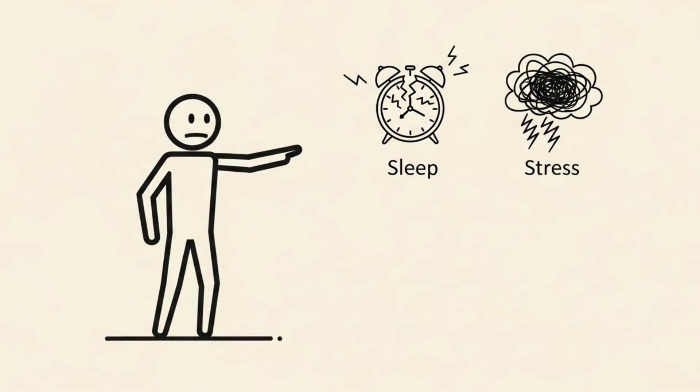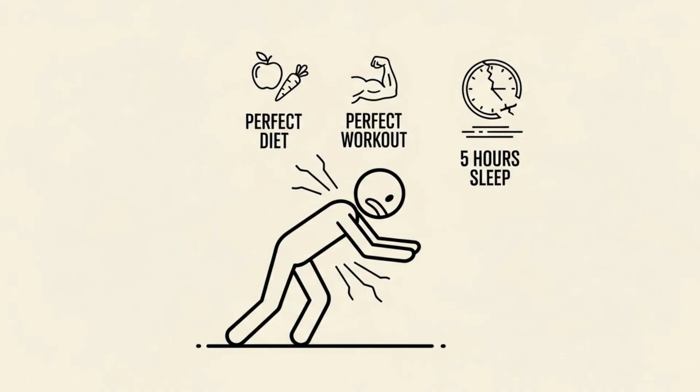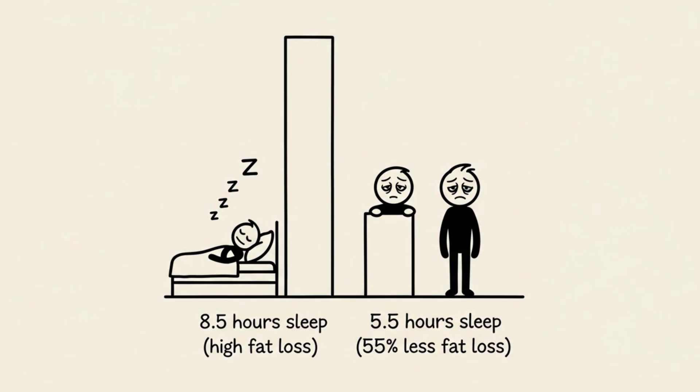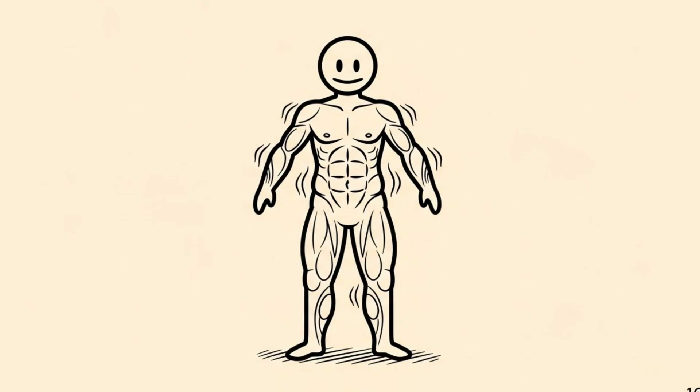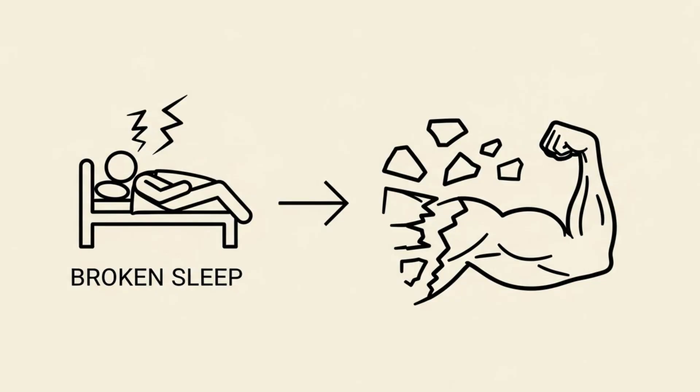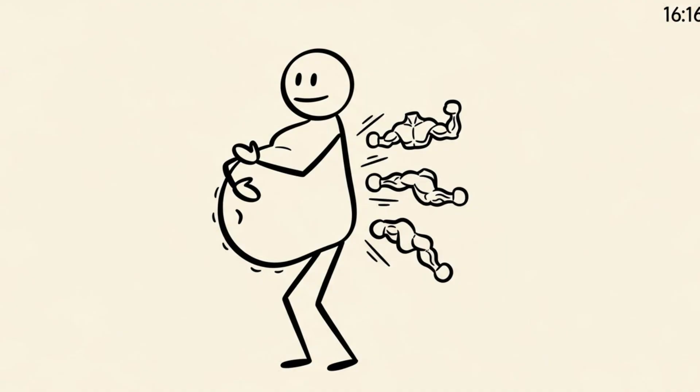Finally, we need to address the silent killers of fat loss. Sleep and stress. You can have the perfect diet and the perfect workout plan, but if you are sleeping 5 hours a night, you are fighting a losing battle. A study published in the Annals of Internal Medicine showed that when participants cut their sleep from 8.5 hours to 5.5 hours, the amount of fat they lost dropped by 55%. They lost the same amount of weight, but more of it came from muscle mass, not fat. Sleep deprivation makes your body catabolic. It wants to hoard fat and shed muscle.